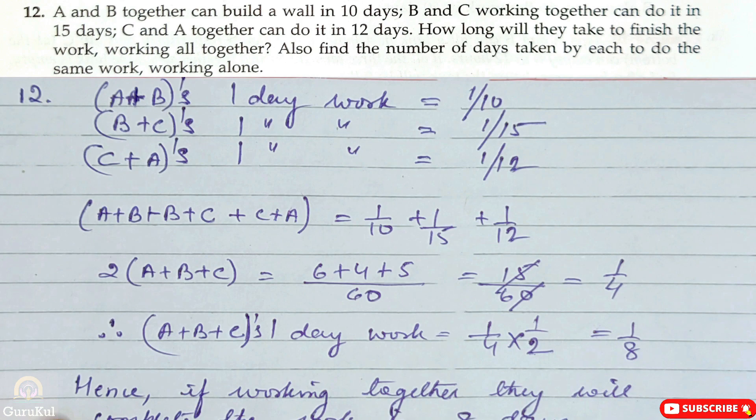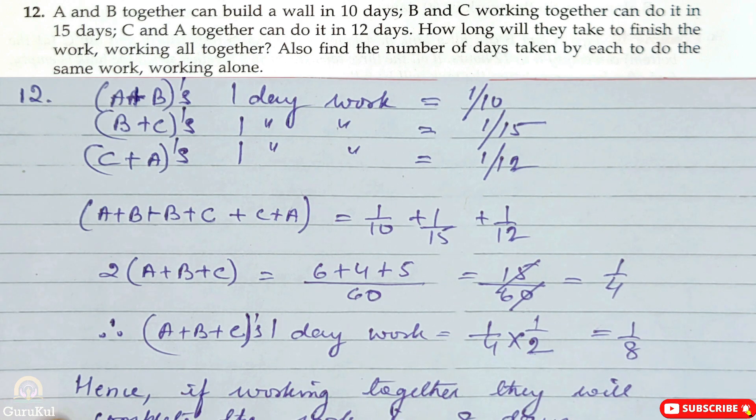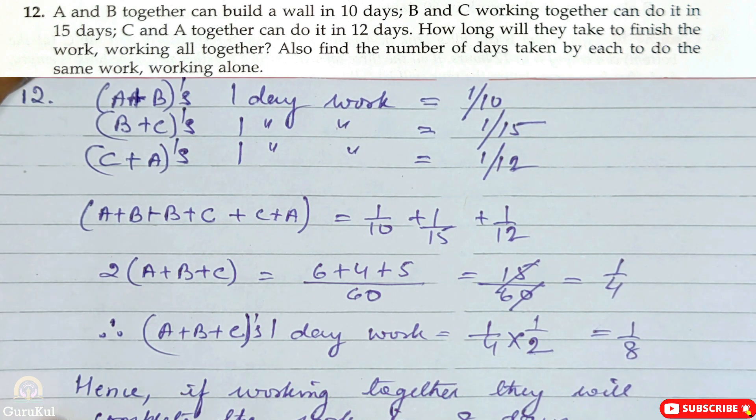Now question number 12. A plus B together can build a wall in 10 days. B and C working together can do it in 15 days. While C and A together can do it in 12 days. So how long will they take to finish the work working all together? Next part asks: find the number of days taken by each to do the same work, if working alone. Clear?